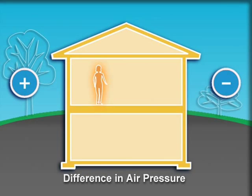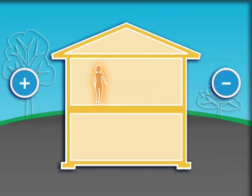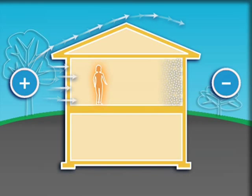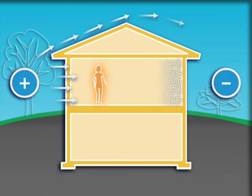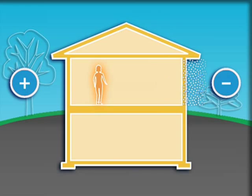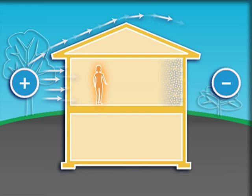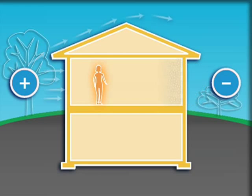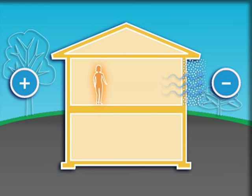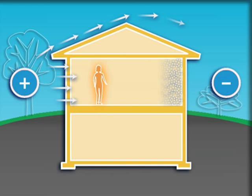A difference in air pressure is another force that allows air, water vapor, and energy to flow. A difference in air pressure can be created by the wind. When the wind blows against the house, it creates a pressure difference across the building. On the windward side of the home, air flows in. On the leeward side, air is drawn out. This airflow can carry energy and moisture into the home and out of the home.